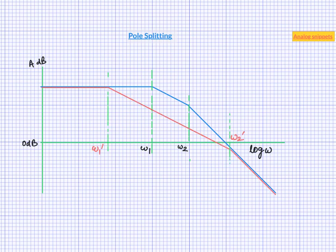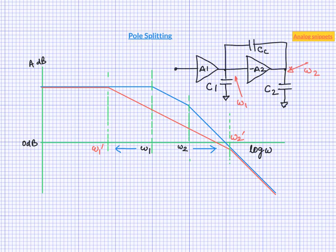So we see here that one pole has moved in and other pole has moved out. Here we implicitly assume that inner pole was the pole at intermediate node and outer pole was the pole at output node. So a simple intuitive explanation of first pole moving in is that after Miller multiplication CC adds to the C1 and makes this intermediate pole even more dominant.